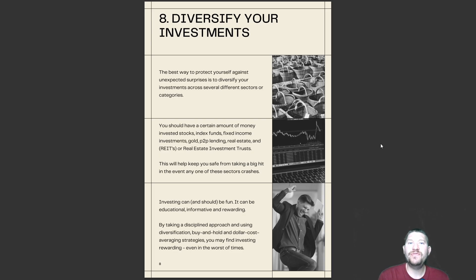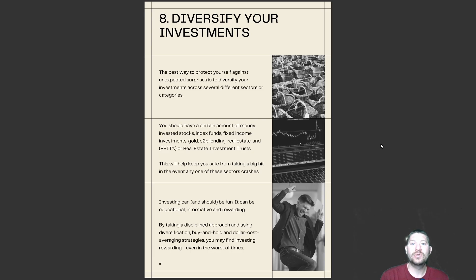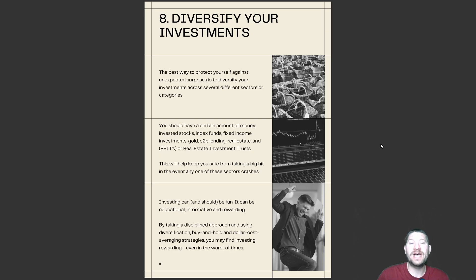Diversify your investments. The best way to protect yourself against unexpected surprises is to diversify your investments across several different sectors or categories. You should have money invested in stocks, index funds, fixed income investments, gold, P2P lending, real estate, and REITs — real estate investment trusts. This will help keep you safe from taking a big hit if any one of these sectors crashes. Investing can and should be fun — it can be educational, informative, and rewarding. By taking a disciplined approach and using diversification, buy and hold, and dollar cost averaging strategies, you may find investing rewarding even in the worst of times.